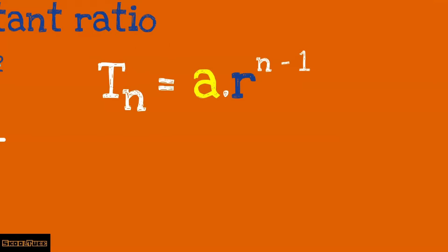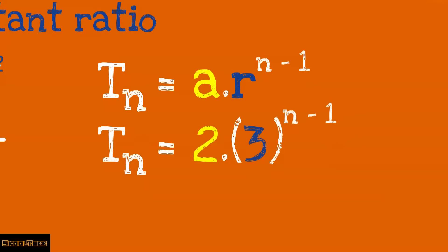Now let us find the nth term. Tn equals a multiplied by r exponent n minus 1. Therefore, Tn equals 2 (the first term) multiplied by r (the constant ratio) exponent n minus 1. For clarity, just put the 3 inside the brackets.